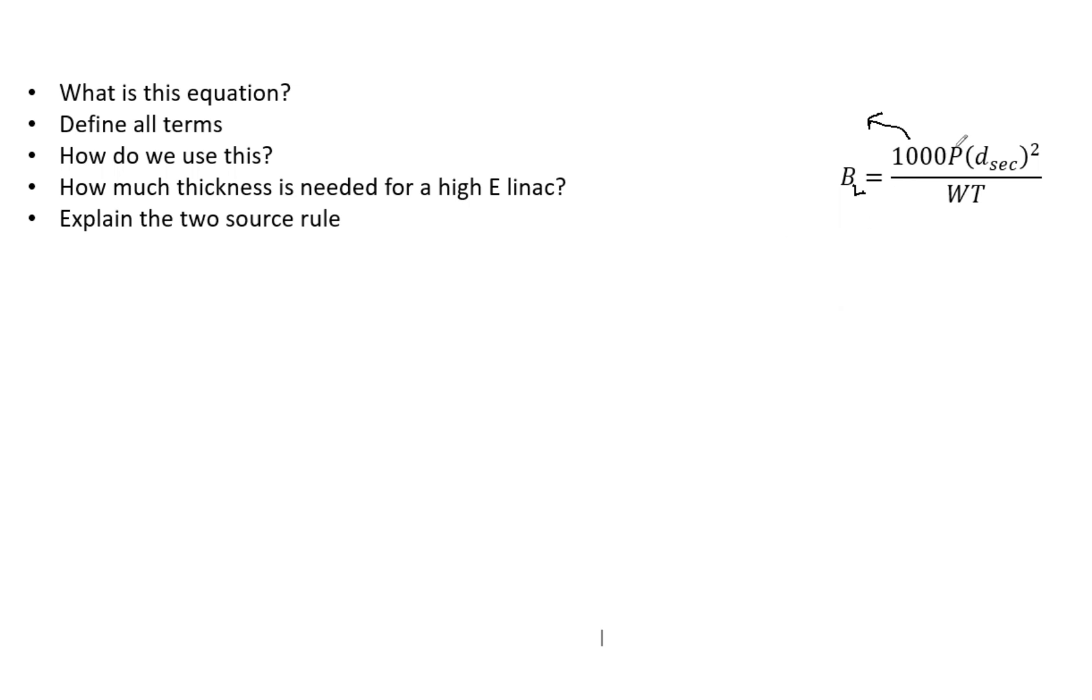Here we have our permissible dose rate, just like all of our other shielding calculations. D_sec right here is the distance from isocenter to 0.3 meters beyond the barrier. Always remember that is 0.3 meters beyond, and of course, that is squared. W we have as our workload. And T is our occupancy factor. Also note, for head leakage, we do not have a use factor because the head leakage is coming from essentially almost isotropic. So you do not have a use factor in this equation.